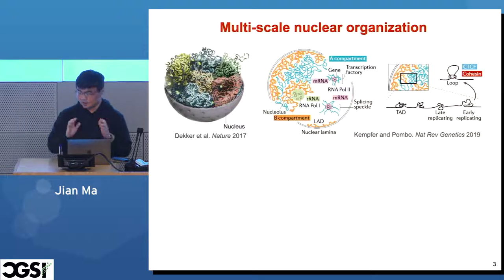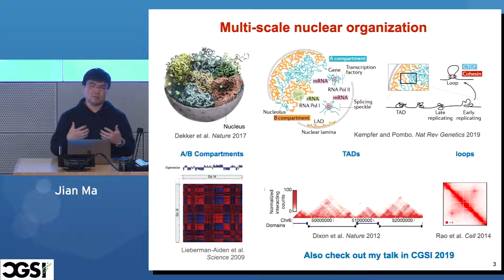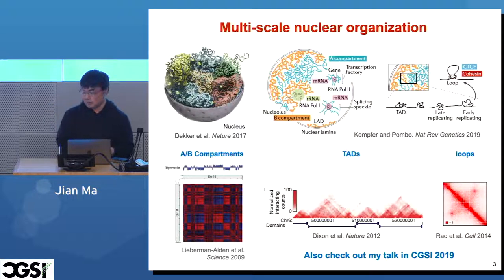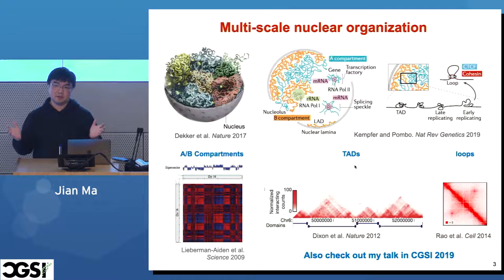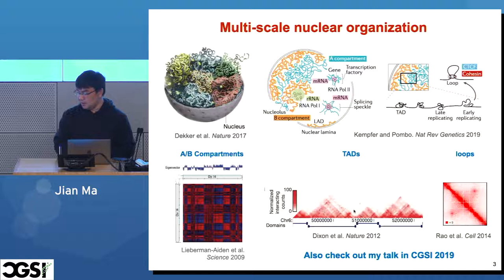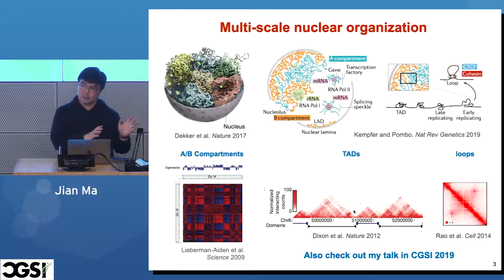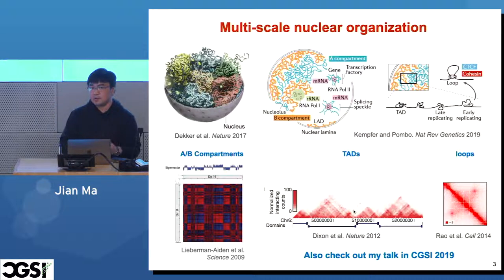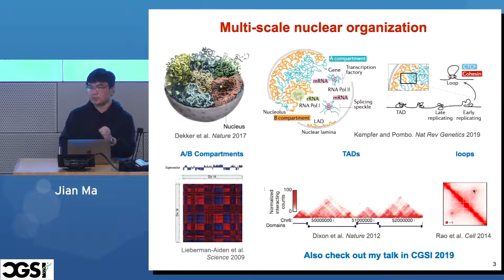At large scale, chromatins are organized into the so-called A-B compartments, where A corresponds to more active chromatin and B to more repressive chromatin regions. Zooming in, you can see finer resolution structures — for instance, topologically associated domains, where chromatins interact with each other more frequently than surrounding regions. There are also boundaries between these domains. Zooming in further, you see even finer-scale structures like chromatin loops, manifested as off-diagonal high-intensity dots in 2D contact maps, representing two chromatin regions contacting each other more frequently than expected.